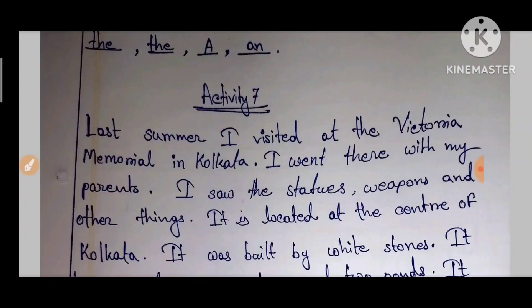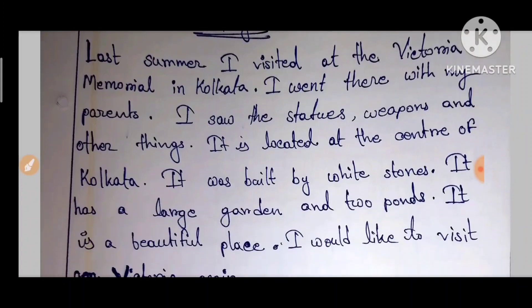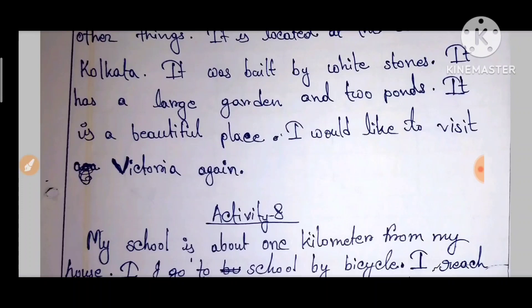Last summer I visited Victoria Memorial in Kolkata. I went there with my parents. I saw statues, weapons, and other things. It is located at the center of Kolkata. It was built with white stone. It has a large garden and two ponds. It is a beautiful place. I would like to visit Victoria Memorial again.